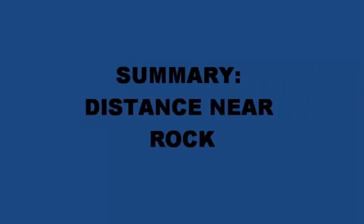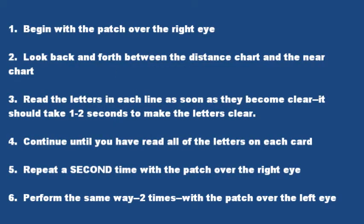Repeat this technique a second time before moving the eye patch to the left eye. Summary of steps: one, begin with a patch over the right eye; two, go back and forth between the distance chart and the near chart; three, read the letters in each line as soon as they become clear — it should take one to two seconds; four, continue until you have read all the letters on each card; five, repeat a second time with the patch over the right eye; six, perform the same way two times with the patch over the left eye.